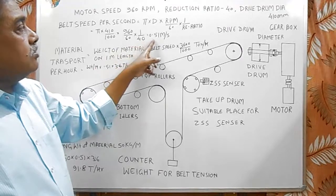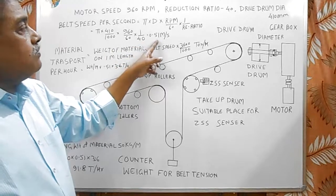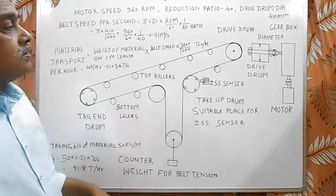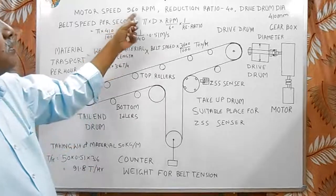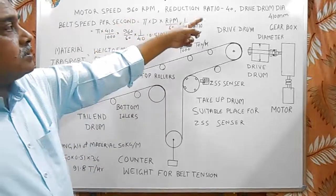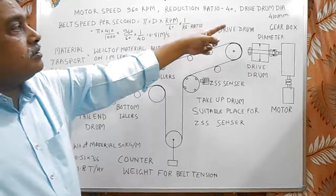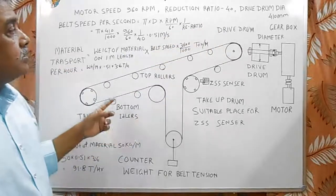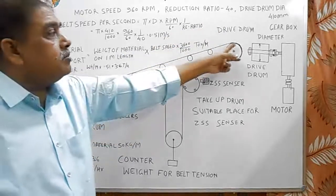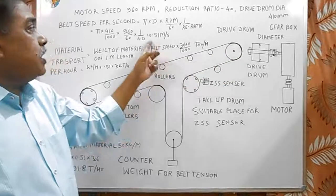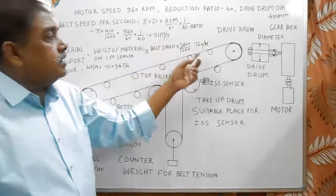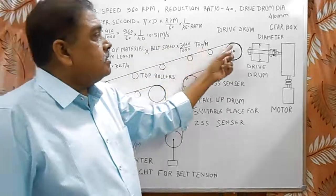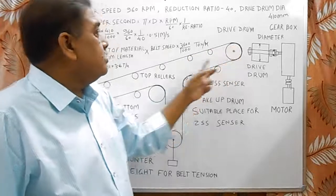It is equal to 0.51 meters per second. Means with this motor of 960 rpm, reducer ratio of gearbox 40 and drive drum diameter is 410, the linear speed of drive drum surface is 0.51 meter per second. And the belt speed is same as the linear speed of drive drum.